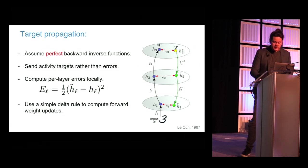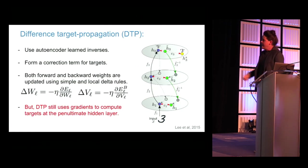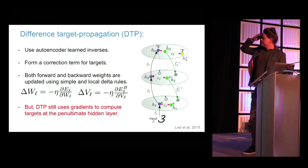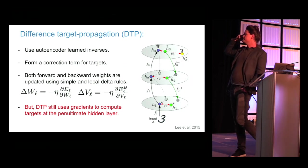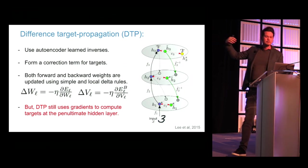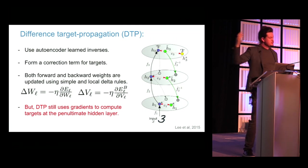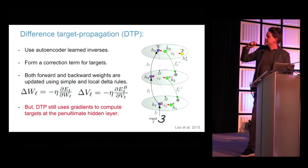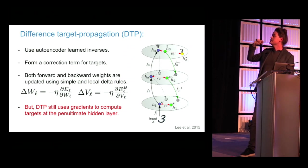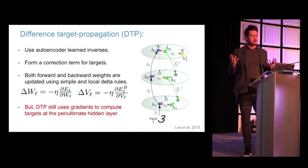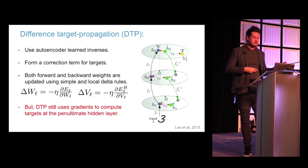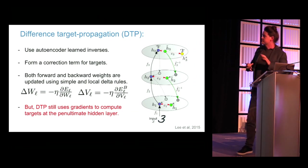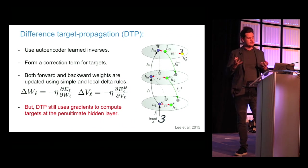The problem is you don't have perfect inverses. Dong Hyun, from Yoshua's lab, realized you could learn these with an autoencoder loss per layer, and with those you could also form a correction term for your targets. With that, you can produce a functional learning algorithm with all the constraints mentioned: no transposes, no sending of signed errors.